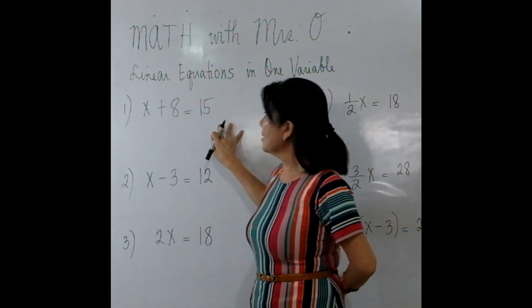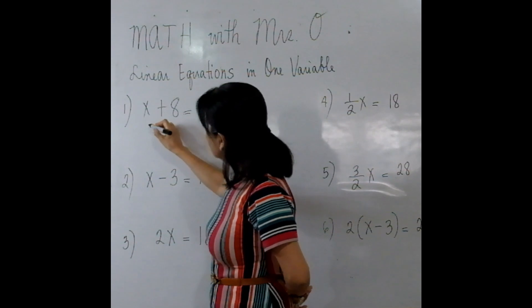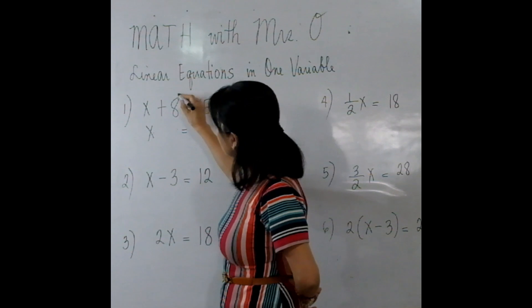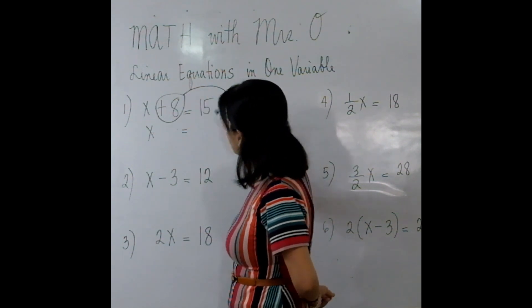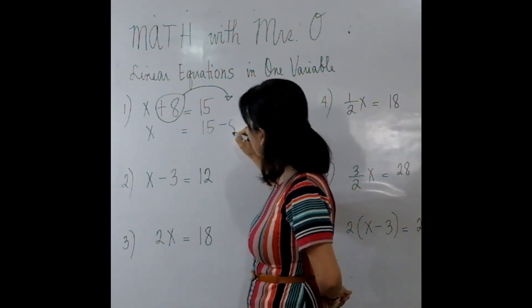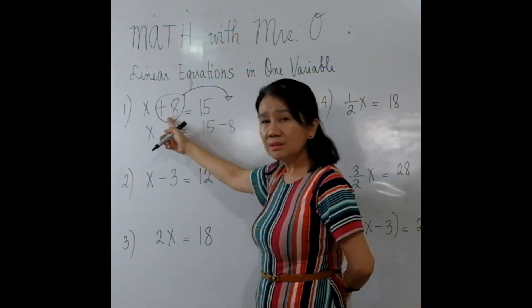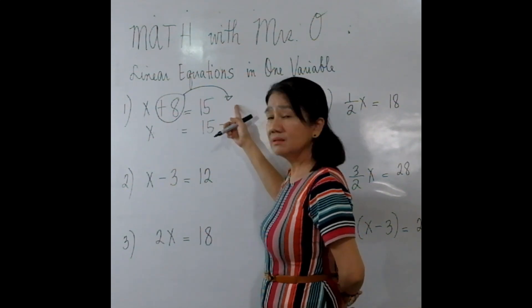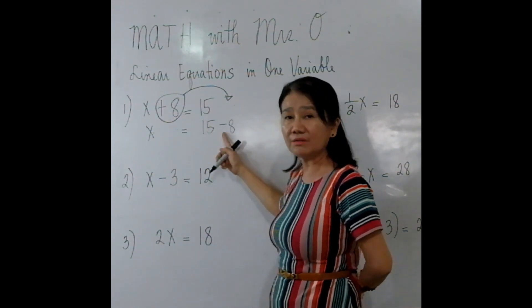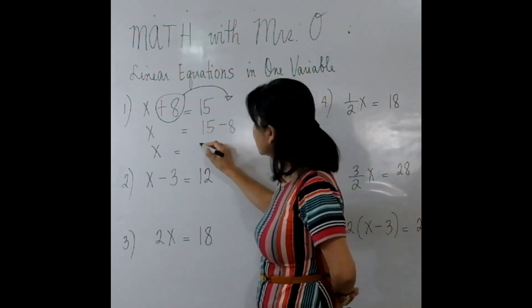Number 1, if you're given an equation like X + 8 = 15, all you have to do is transpose 8 to the other side. So this plus 8, when transposed to the other side, will become negative 8. So you'll have it here as X = 15 - 8. Again, for the second time, whenever you transpose a term to the other side, you have to change the sign of that term. So in this case, the plus 8 becomes negative 8.